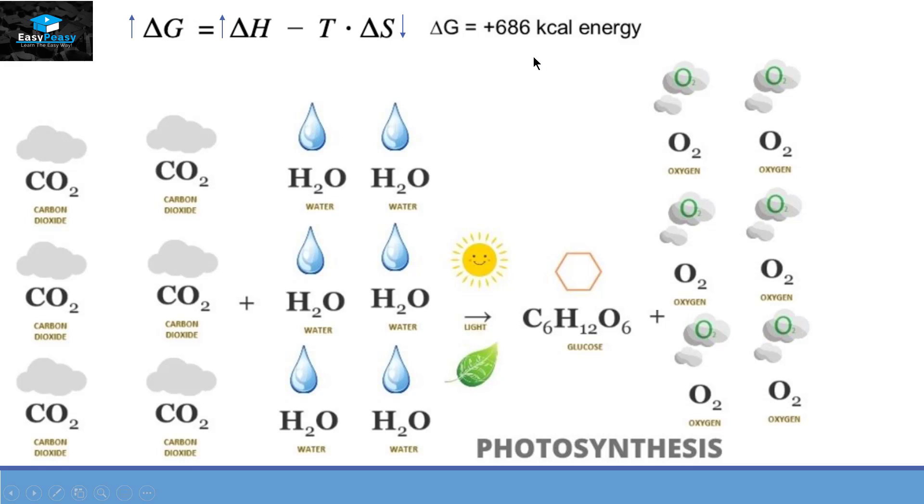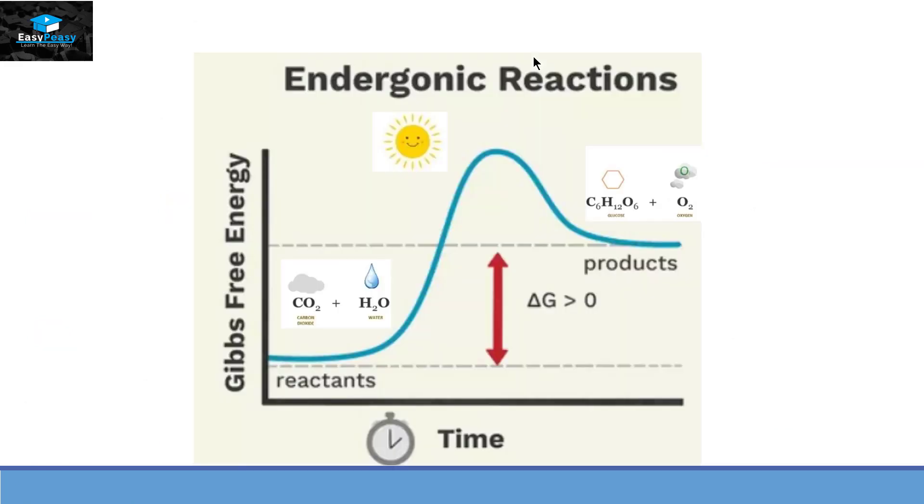So this type of reaction is an endergonic reaction. If we look at this reaction in a graph, we can see that the reactants have less energy and the products have more energy. So the ΔG will be higher than zero. Now what is this slope here? This slope is basically the activation energy required to perform this function, and this activation energy is provided by sunlight here. Make sense?